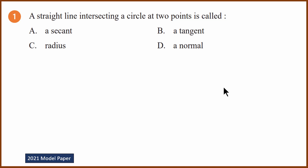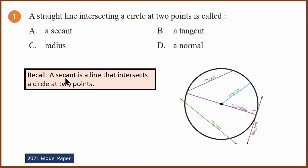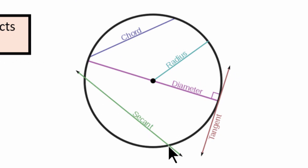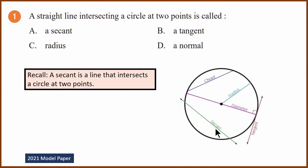The first question is a definition question from the 2021 model paper. A straight line intersecting a circle at two points is called what? Recall: a secant is a line that intersects a circle at two points. Tangent touches at only one point, while secant touches at two points. The answer to this question is A.